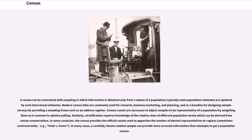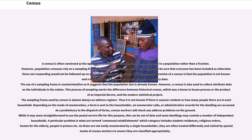In many cases, a carefully chosen random sample can provide more accurate information than attempts to get a population census. A census is often construed as the opposite of a sample, as its intent is to count everyone in a population rather than a fraction. However, population censuses rely on a sampling frame to count the population.